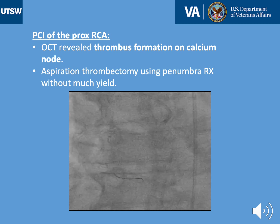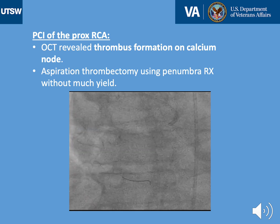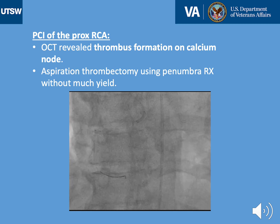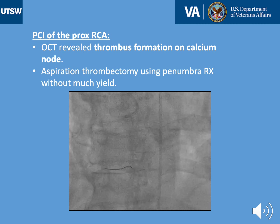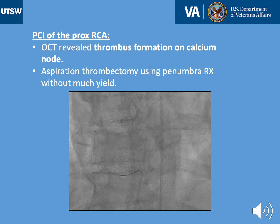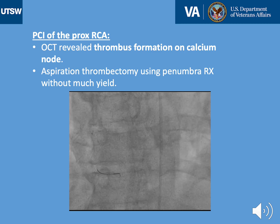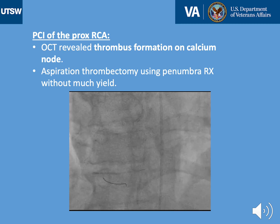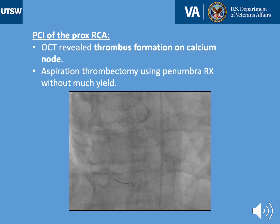We therefore proceeded with OCT, which showed mostly thrombus — organized thrombus formation on a calcium node. We then proceeded with aspiration thrombectomy using a Penumbra catheter, but without much yield, mostly due to the fact that we could not pass the catheter beyond the lesion.